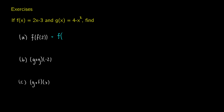To find f of f of 2, we first evaluate f of 2. Since f is 2x minus 3, that means 2 times 2 minus 3, which is 4 minus 3, so f of 2 equals 1. Now we evaluate f of 1: it's 2 times 1 minus 3, which is 2 minus 3, giving us negative 1 as the output.